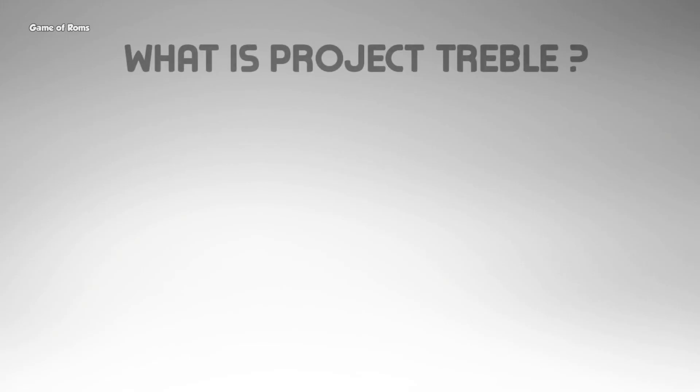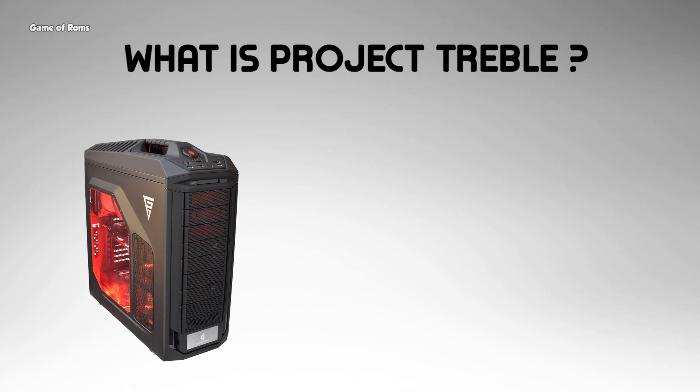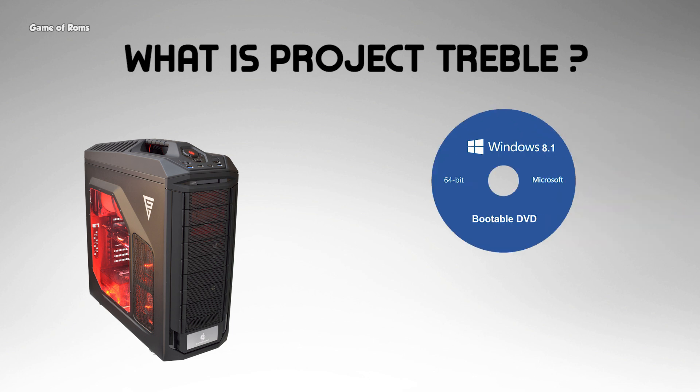So first of all, what is Project Treble? Let me explain in very simple words. You know how Windows works, right? Whenever you want to install Windows on some hardware, all you need is a CD or a pen drive. If that hardware is compatible, you can install Windows 7, Windows 8, Windows 10, or even a different operating system like Ubuntu.